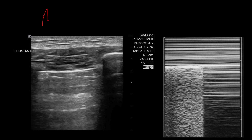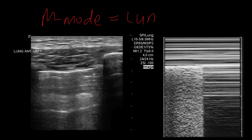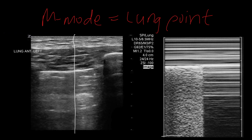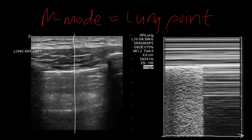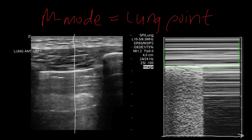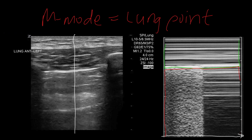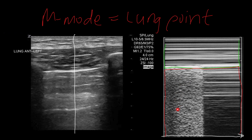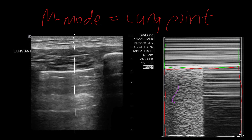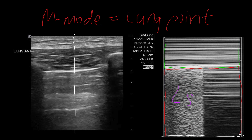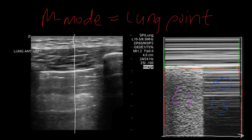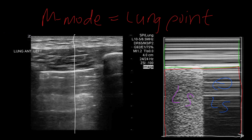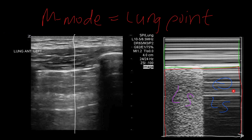So what does a lung point look like on M-mode? We take a slice of the 2D image, display it over time, and look at everything above and below the pleural line. Above looks the same, but below — see how on one portion we see a grainy, dynamic appearance? This is indicative of lung sliding. On the other half, we see no lung sliding. This is that on-and-off phenomenon of the lung point in the same intercostal segment — lung sliding present, lung sliding absent.